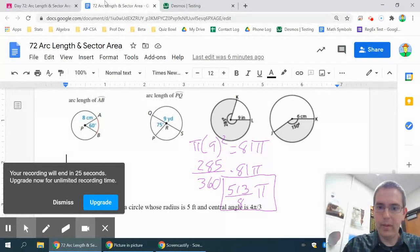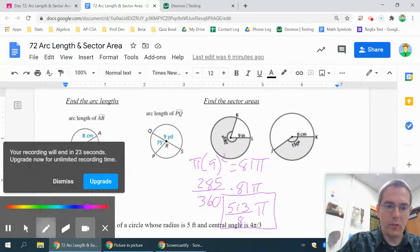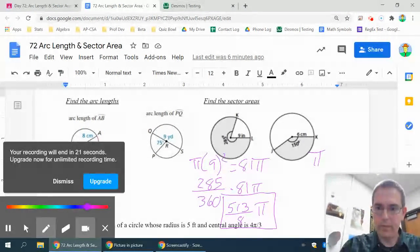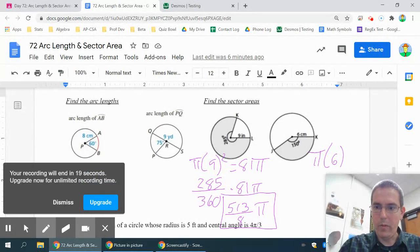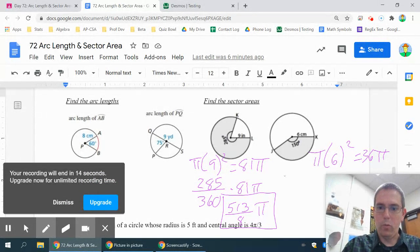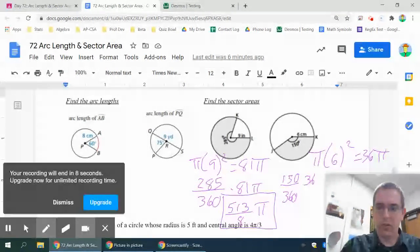Same basic idea. You have π times 6 squared would be 36π. And then just do 150 over 360 times that answer. And I'll leave it to you to put this one in Desmos and simplify it out.